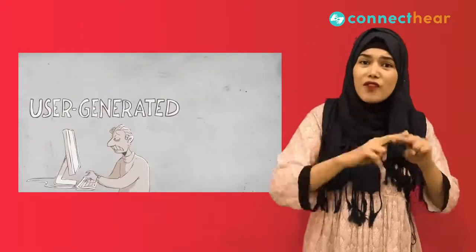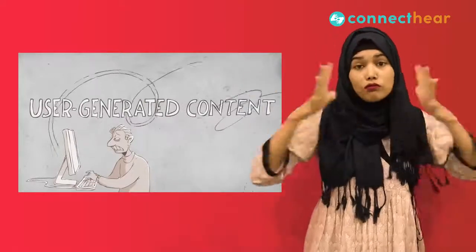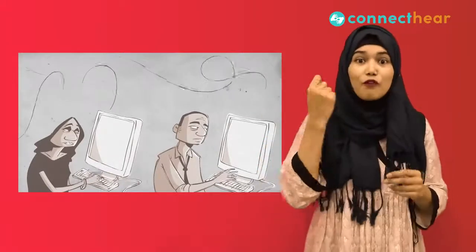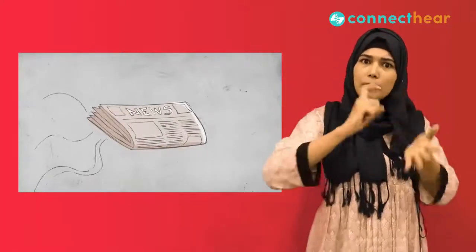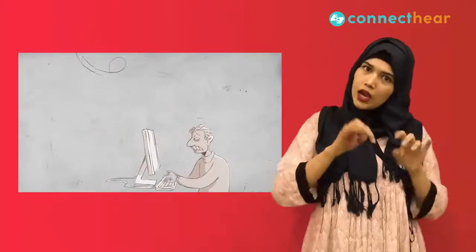User-generated content such as wikis are also a common contributor to circular reporting. As more writers come to rely on such pages for quick information, an unverified fact in a wiki page can make its way into a published article that may later be added as a citation for the very same wiki information, making it much harder to debunk.